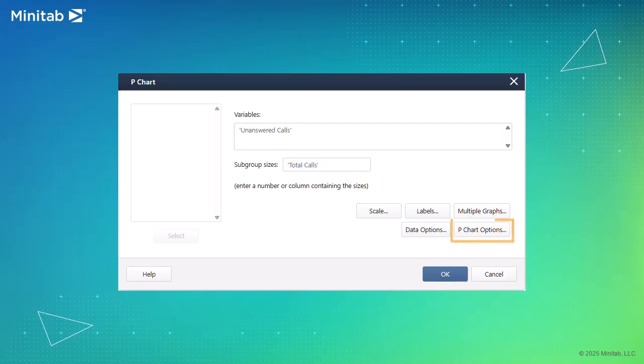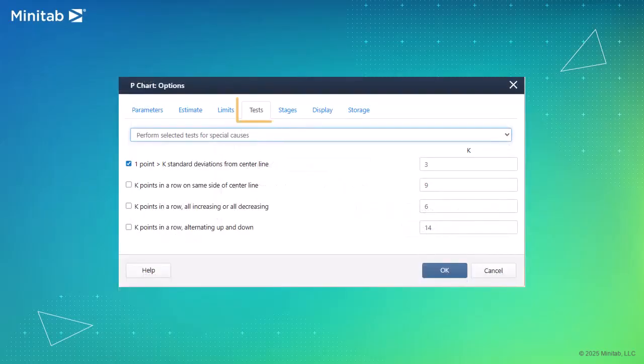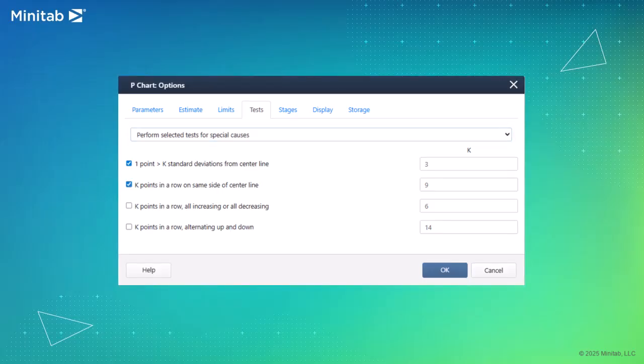Select P-Chart Options. On the Tests tab, select Test 1 and Test 2. In this case, you're not sure which tests apply, so use Tests 1 and 2 to first establish the control limits based on your data.